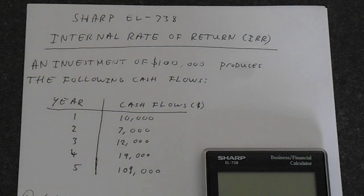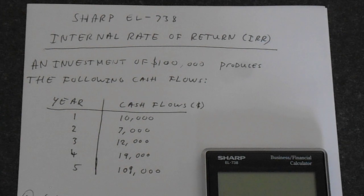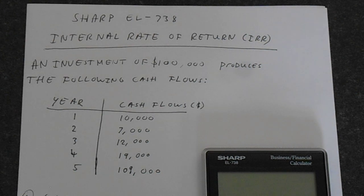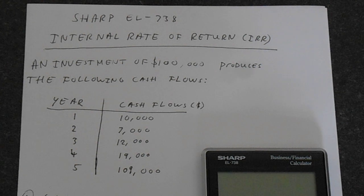In this video I'm going to show you how to calculate the internal rate of return using a Sharp EL738 calculator. The best way to do this is to jump straight into a worked example and do it practically. So as a very simple example, we have an investment of a hundred thousand dollars which produces the cash flows shown in the table.